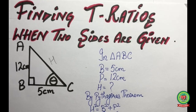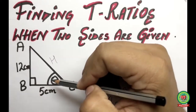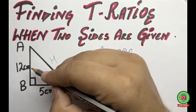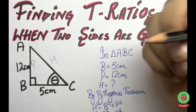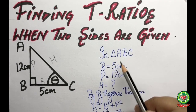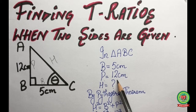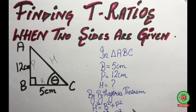Here, AC is opposite to angle B which is 90 degrees, so AC will be the hypotenuse. The side opposite to the reference angle is the perpendicular — here AB is opposite to the reference angle, so AB will be the perpendicular. The remaining side, BC, is the base. So in triangle ABC: base = 5 cm, perpendicular = 12 cm, and hypotenuse is missing.